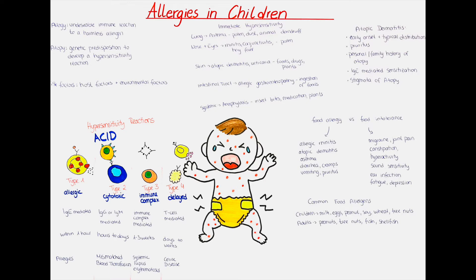Several genes have been identified to cause atopy. To recap: atopy is the genetic predisposition to develop an exaggerated IgE response, while allergy is the actual hypersensitivity reaction to a specific allergen causing symptoms in a patient.